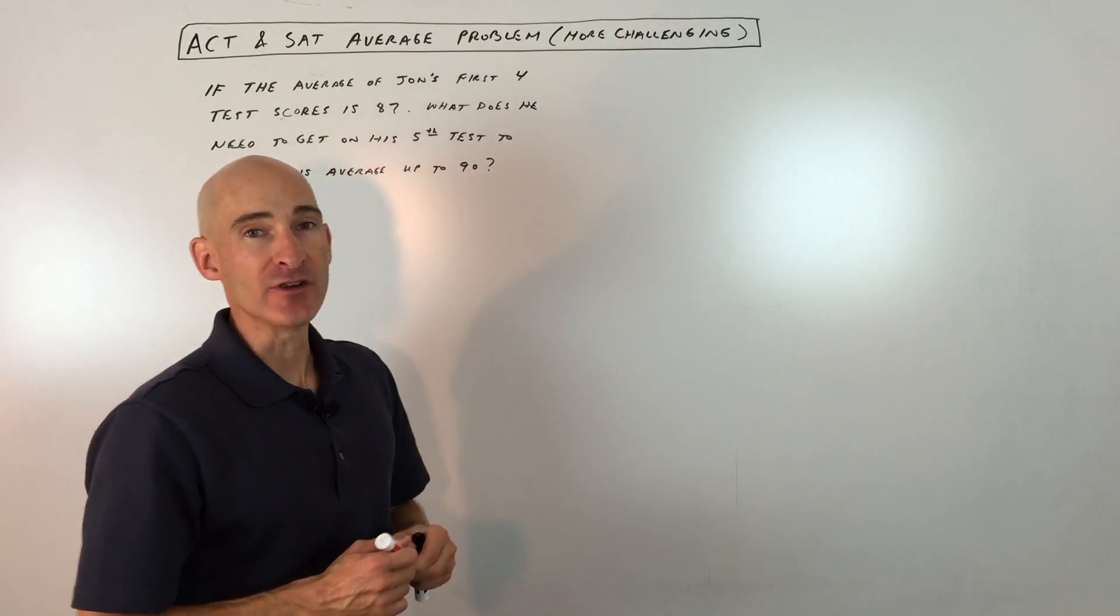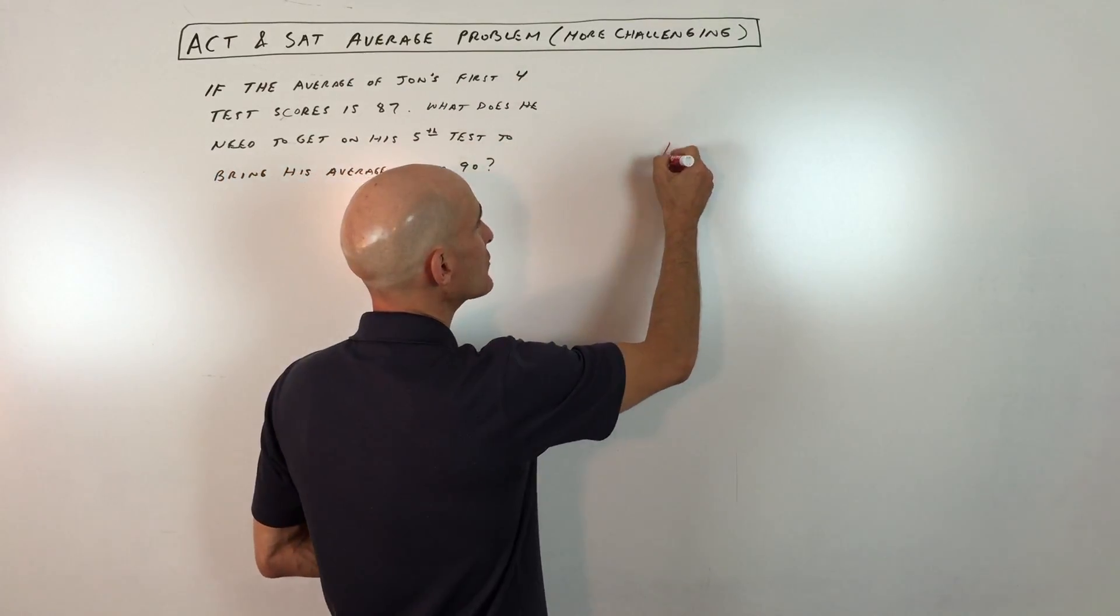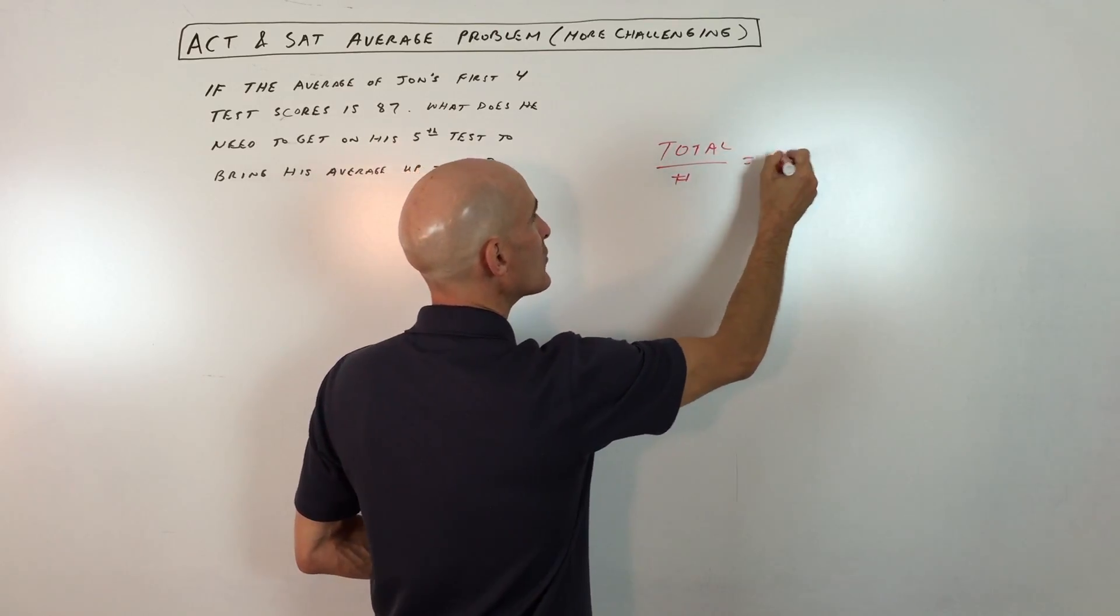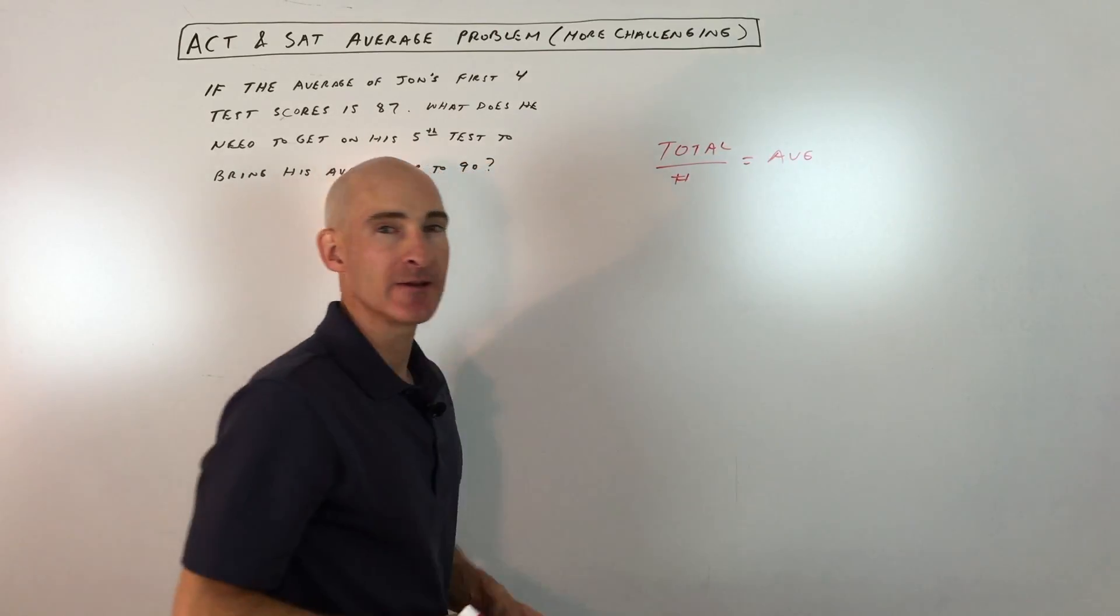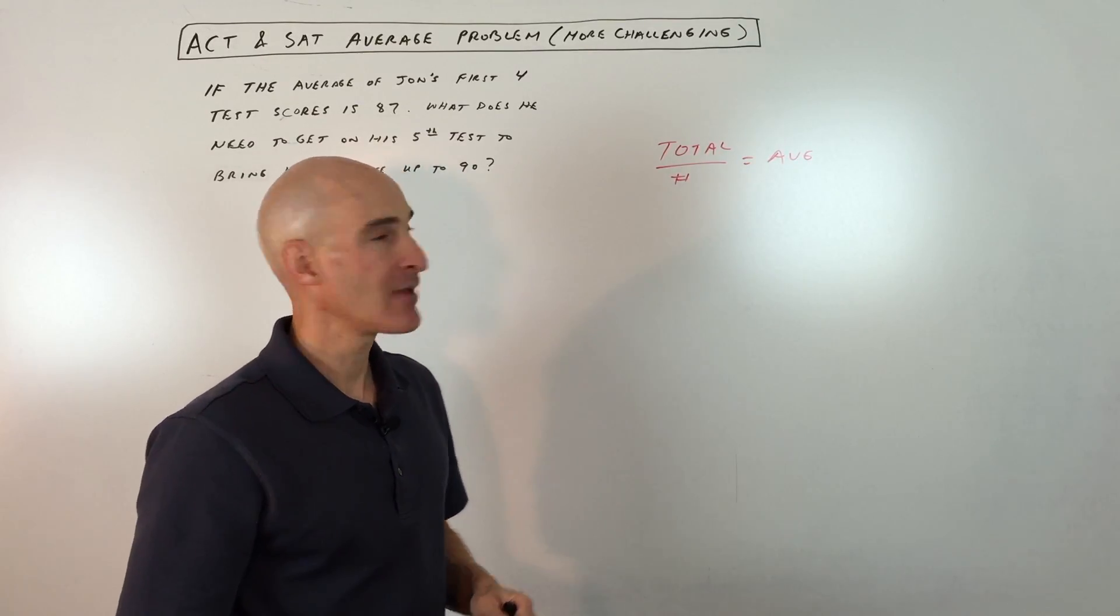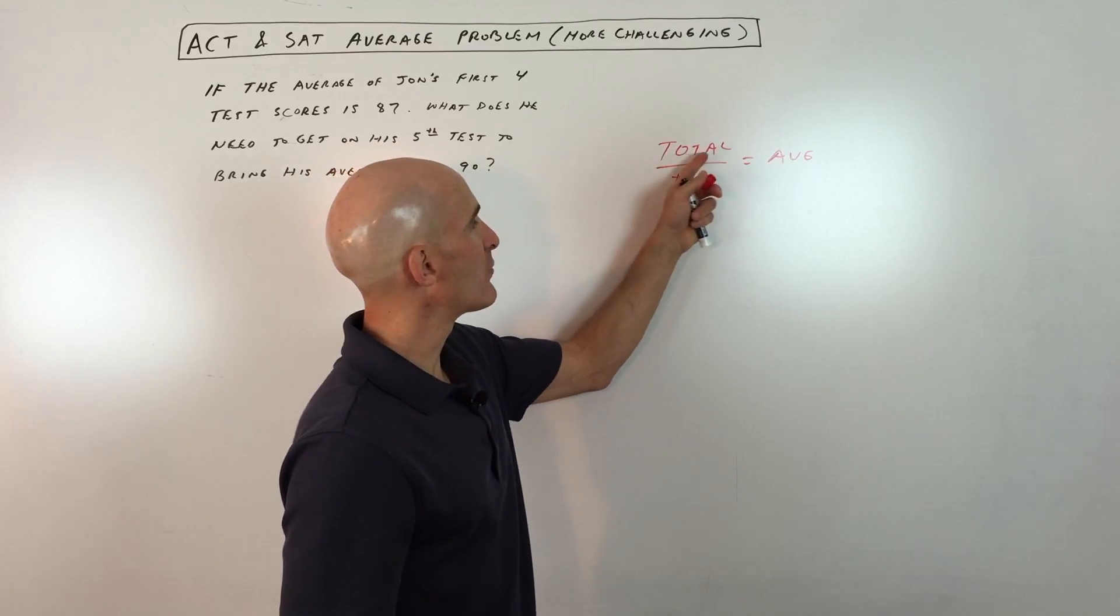What I want to show you is what an average is. We already know that an average is the total divided by how many—that equals the average. For example, if you're trying to calculate how many average basketball shots you make in a basketball game, you'd count the total number of baskets.